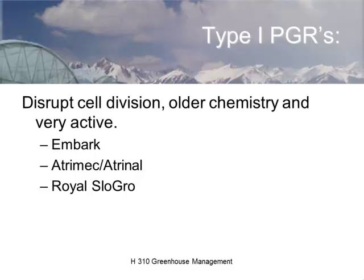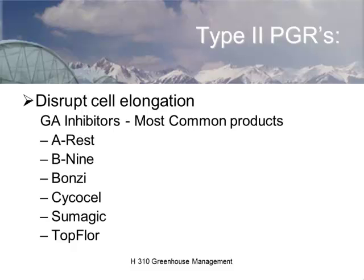Some plant growth retardants have different kinds of chemical response. Older chemicals — Embark, Atrimec, Royal Slow Grow — are Type 1 plant growth regulators that disrupt cell division. The modern anti-gibberellins actually disrupt cell elongation. Those include A-Rest, B9, Bonzi, Cycocel, Sumagic, and Topflor.